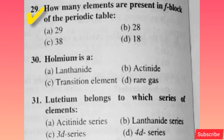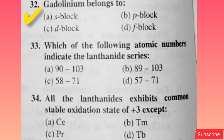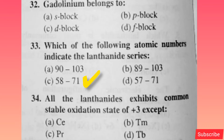How many elements are there in the lanthanide series? Option B is correct. How many elements are present in the f-block of the periodic table? Option B is correct. Which of the following atomic numbers indicate the lanthanide series? Option C is correct.